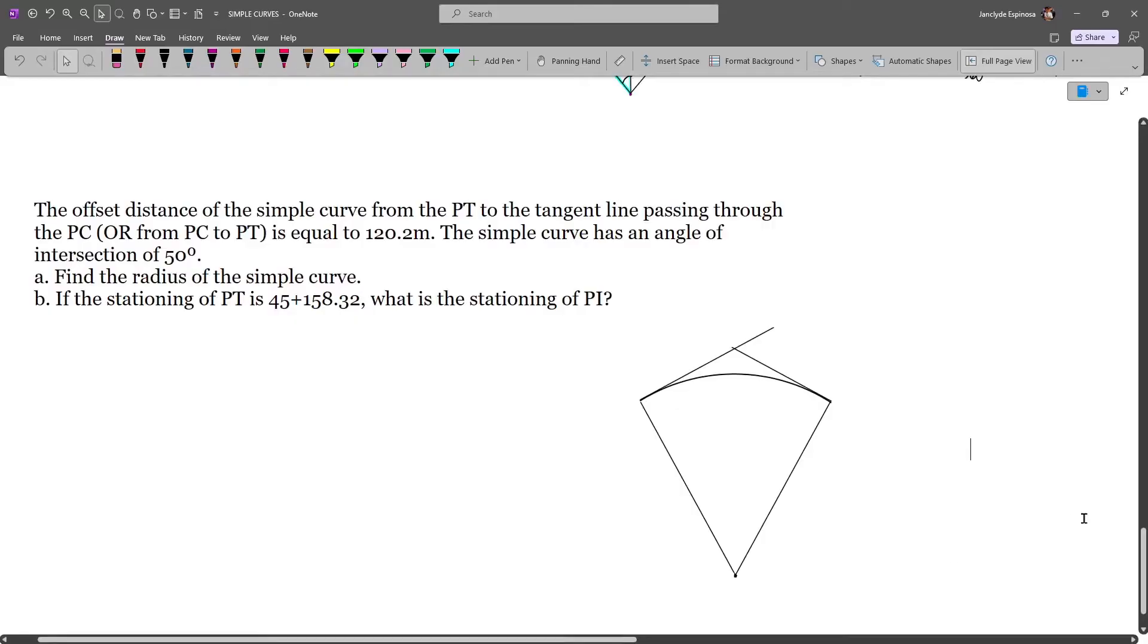Now for our last problem involving simple curves, we have this one. The offset distance of the simple curve from the PT to the tangent line passing through the PC, or in other words, the offset distance from PC to PT, is equal to 120.2m. The simple curve has an angle of intersection of 50 degrees. First, we are to find the radius of the simple curve, and then if the stationing of PT is 45 plus 158.32, what is the stationing of PI?